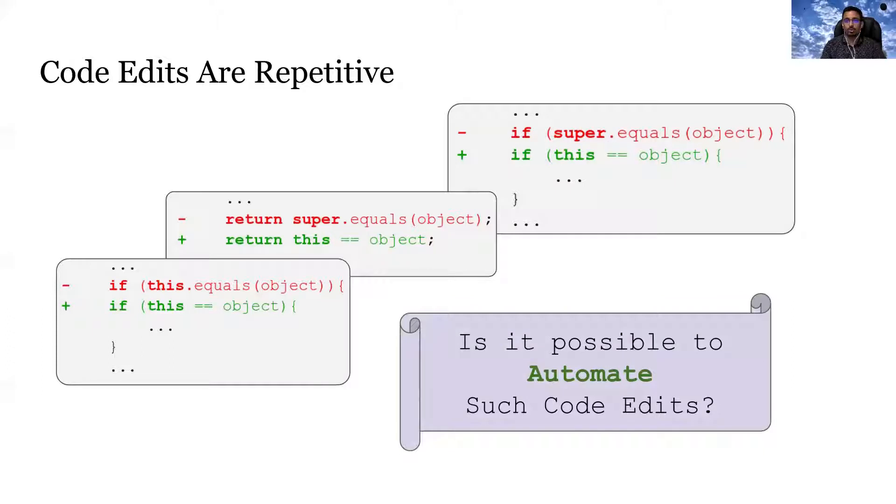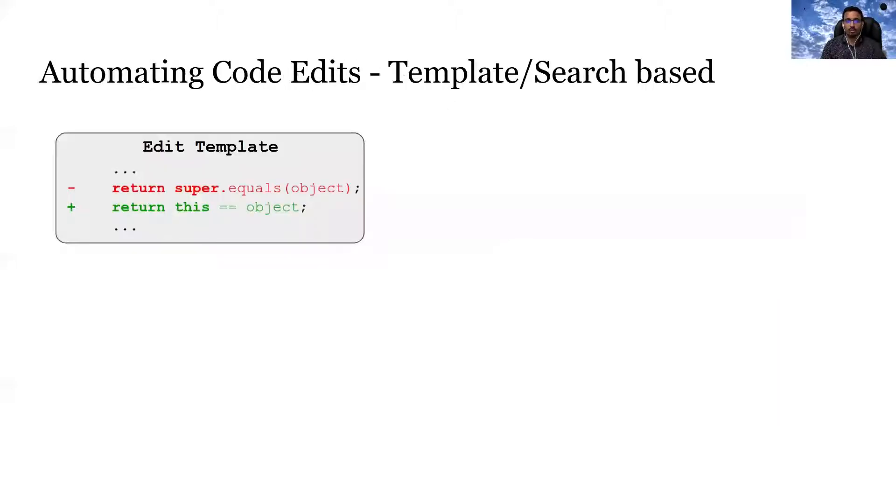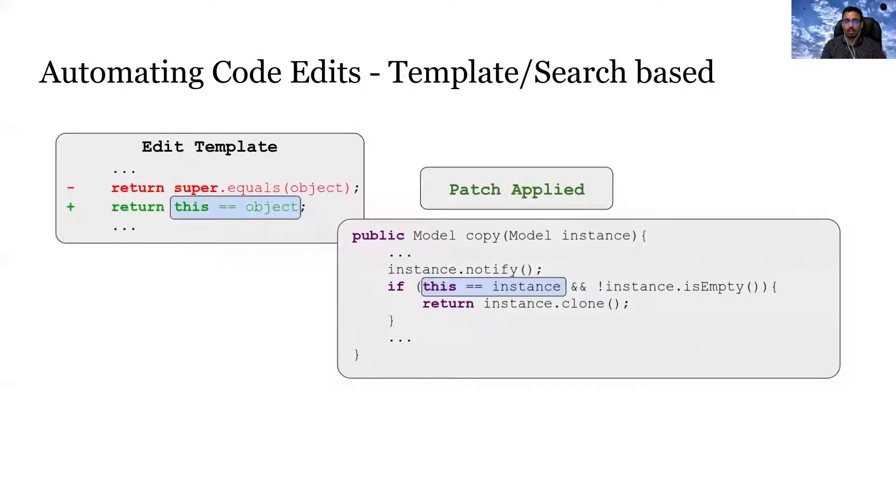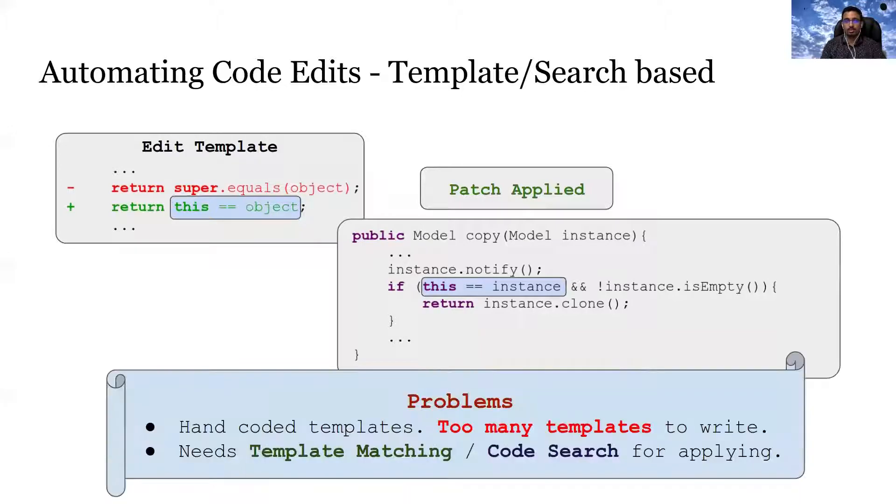Which leads us to investigate, is it possible to automate such repetitive code edits? One possible way is to manually write edit templates, then search for the template code in the code base. Once a match is found, apply the corresponding patches. However, such an approach has one problem. These templates are usually handwritten and very tedious to write. Also, the efficacy of this approach highly depends on the code search and template matching success.